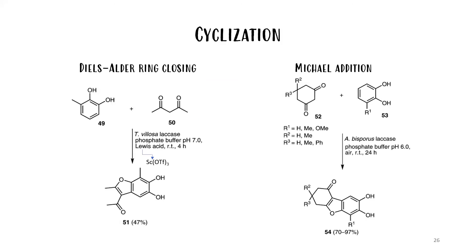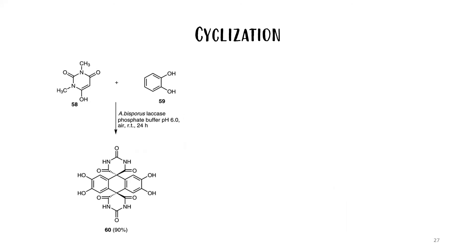Another use of substrate radicals is for cross-coupling reactions with different molecules, where the reactive intermediate is trapped by another molecule so it cannot dimerize or polymerize. Two cyclization reactions start by oxidizing a catechol derivative, which then participates in a Diels-Alder ring closing or in a Michael addition creating benzofuran. In a similar reaction, instead of benzofuran, you can also form spiro compounds.